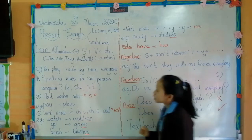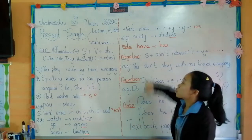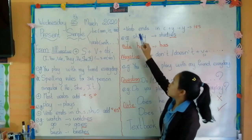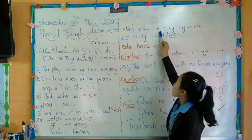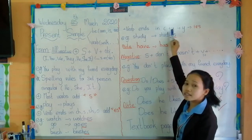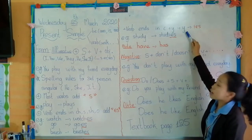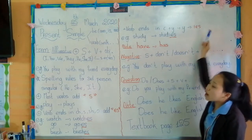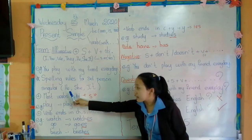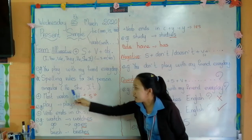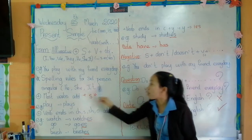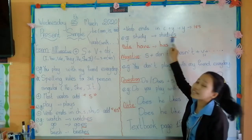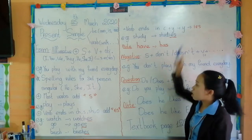So now let's move to one more formula. When the verb ends in a consonant plus Y, you have to change Y to IES when you use with third person singular he, she, or it. For example, study changes to studies.